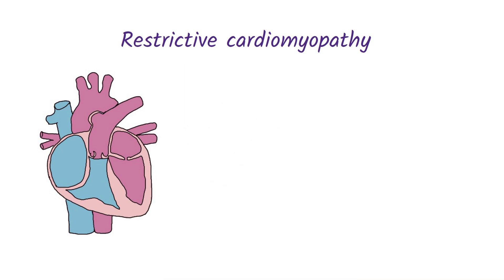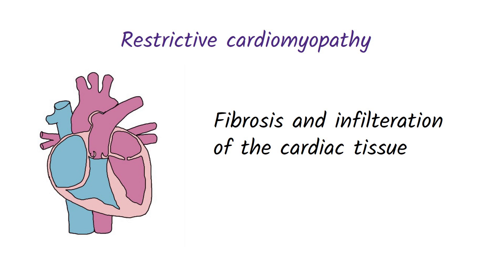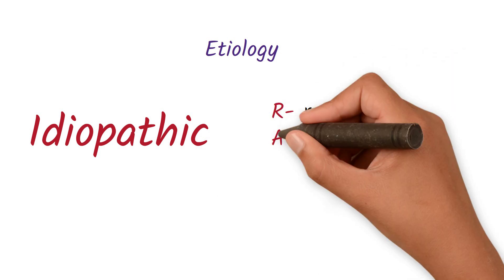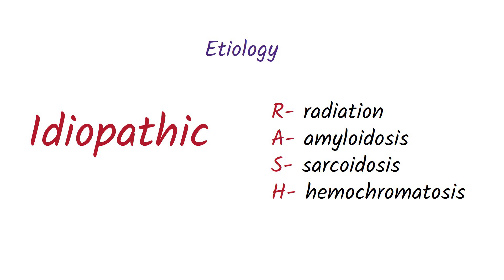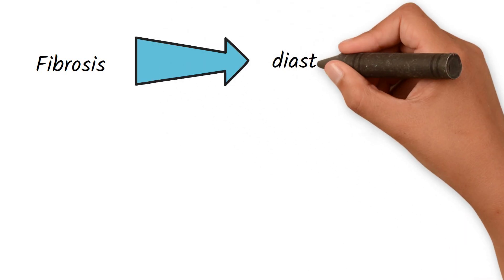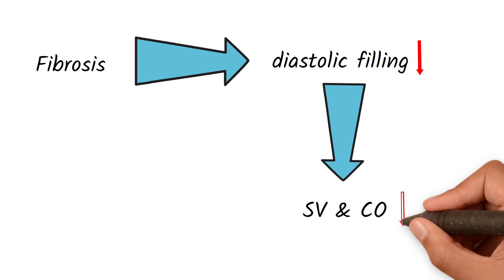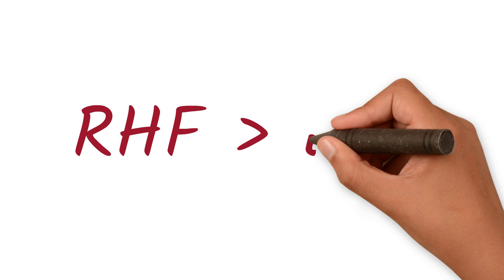Moving on to the last type: restrictive cardiomyopathy. Restrictive cardiomyopathy is a diastolic dysfunction due to fibrosis and infiltration of the cardiac tissue. The etiology is mostly idiopathic, but other causes can be remembered with the mnemonic RASH: Radiation, Amyloidosis, Sarcoidosis, and Hemochromatosis. Due to fibrosis, the heart muscle becomes stiff and cannot dilate during diastole, decreasing diastolic filling and preload, then stroke volume and cardiac output, resulting in left and right heart failure — with right heart failure predominating.